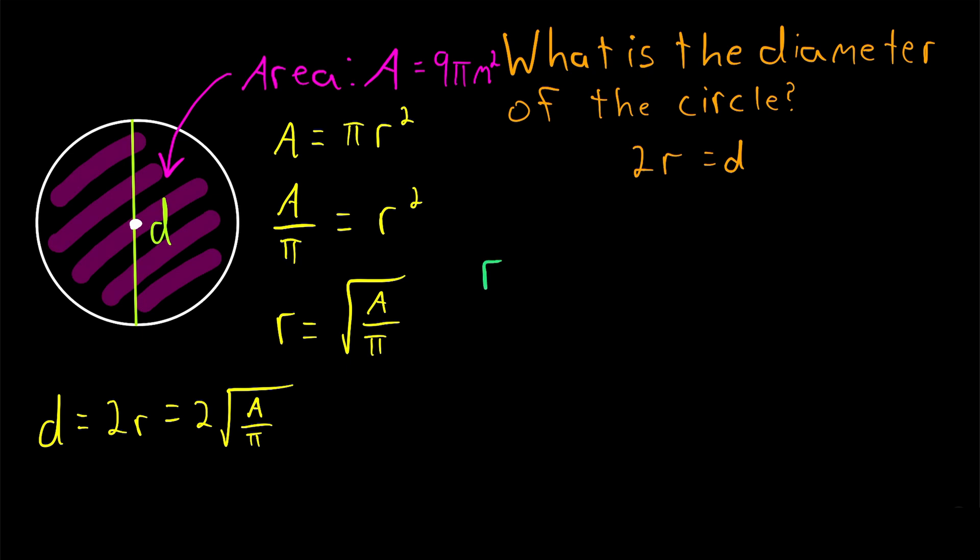To find the radius of this circle, all we have to do is plug our area, 9 pi meters squared in for a, divide it by pi, and take the square root.